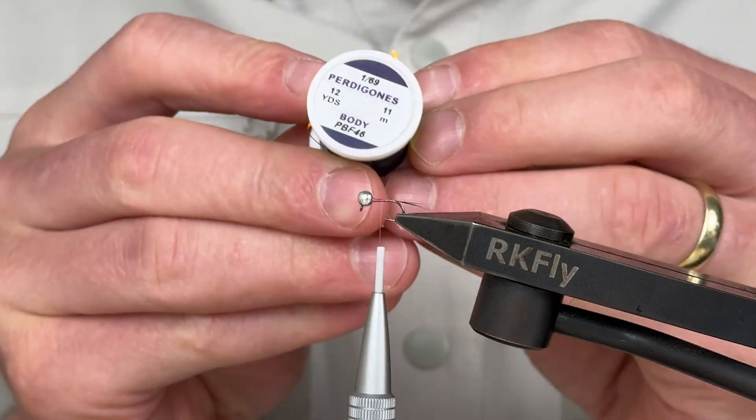We'll secure the position of the lametta with a couple of wraps, creating a thin collar that will serve as a shot trigger.